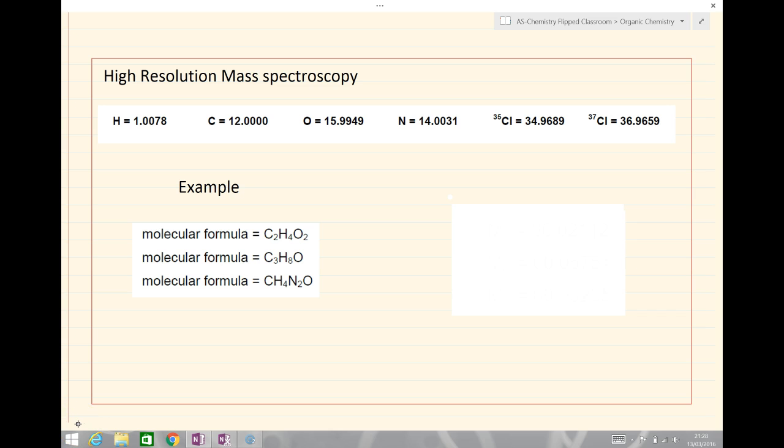Mass spectroscopy, we've looked at before, is where we measure the mass to charge ratio of either atoms or molecules in a spectrometer.